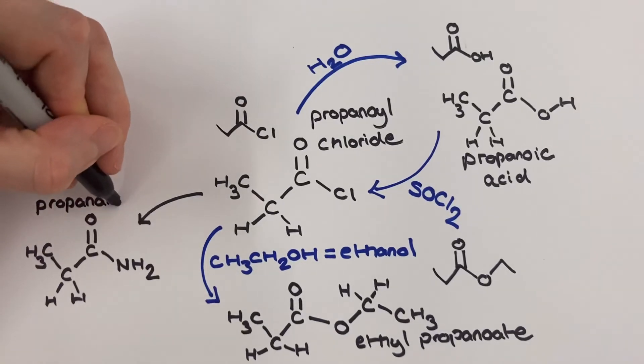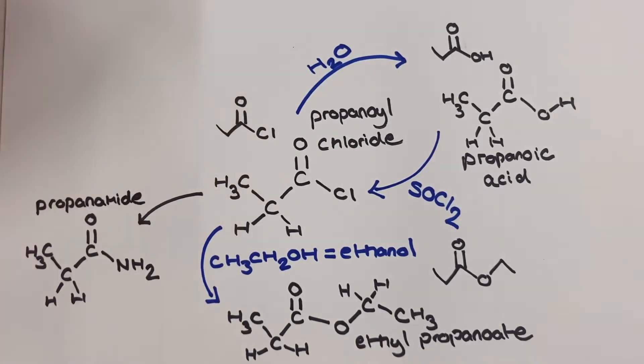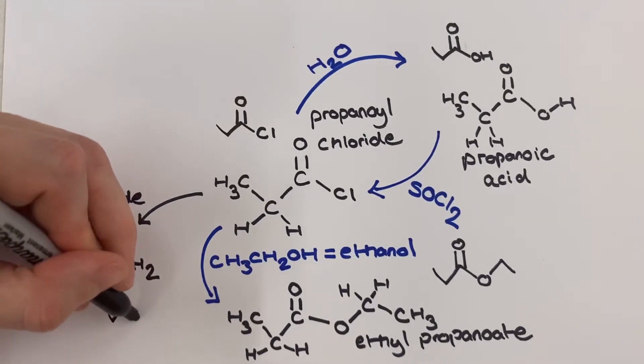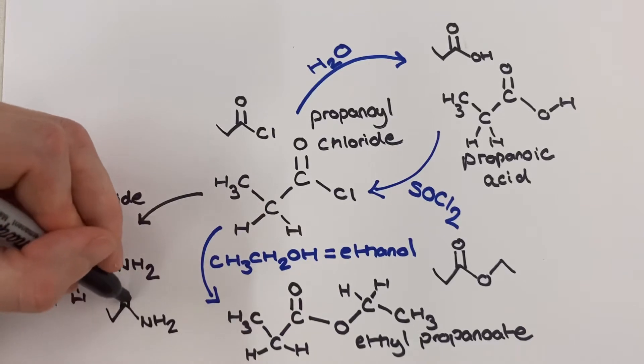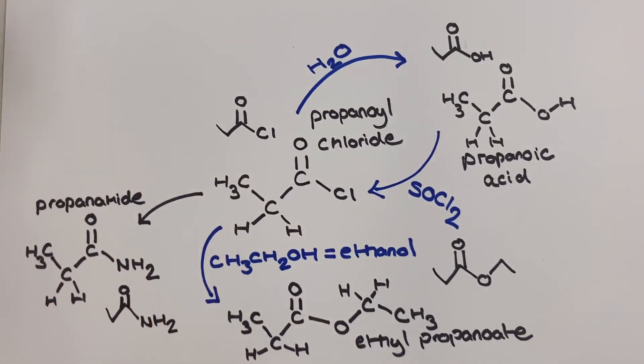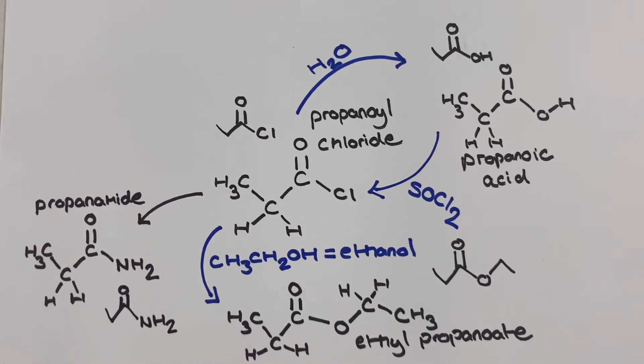An amide is different from an amine because in the example here like propanamide, which is an amide, we can see that the carbon with the NH2 group attached is also double bonded to an oxygen, and in an amine which we'll use very shortly this isn't the case.